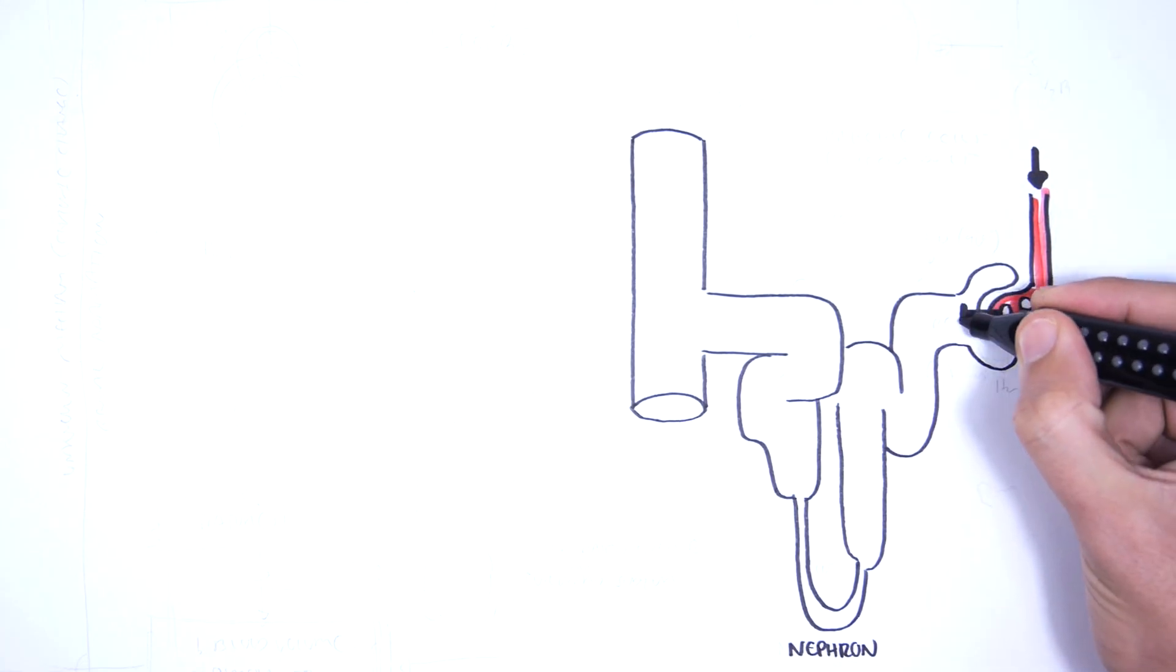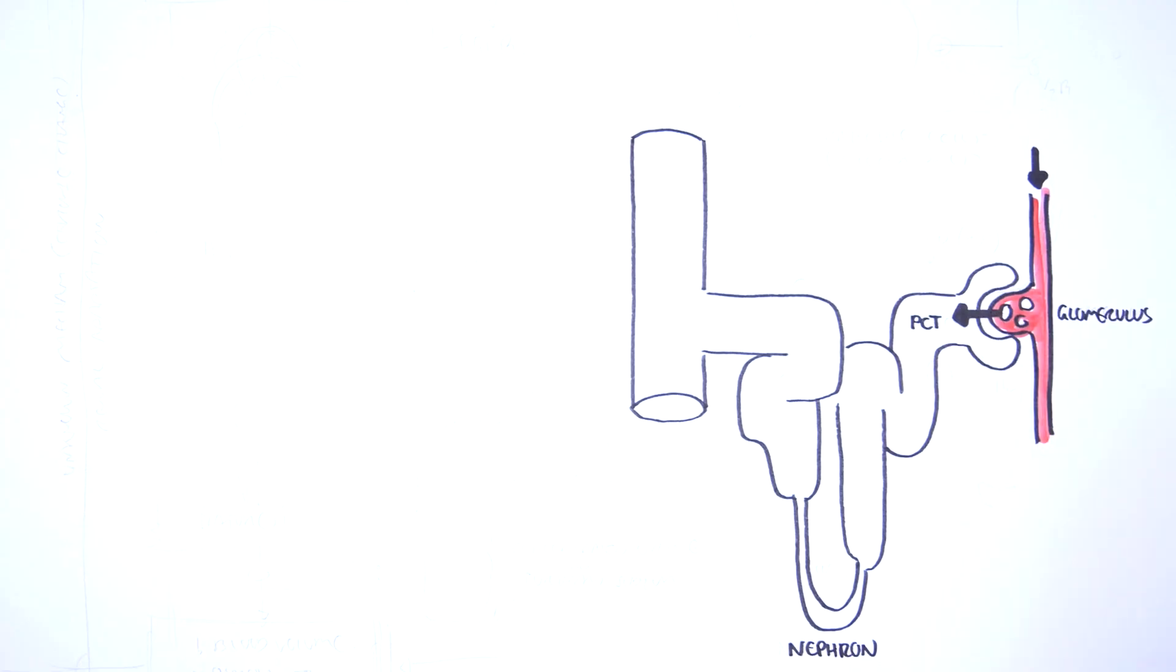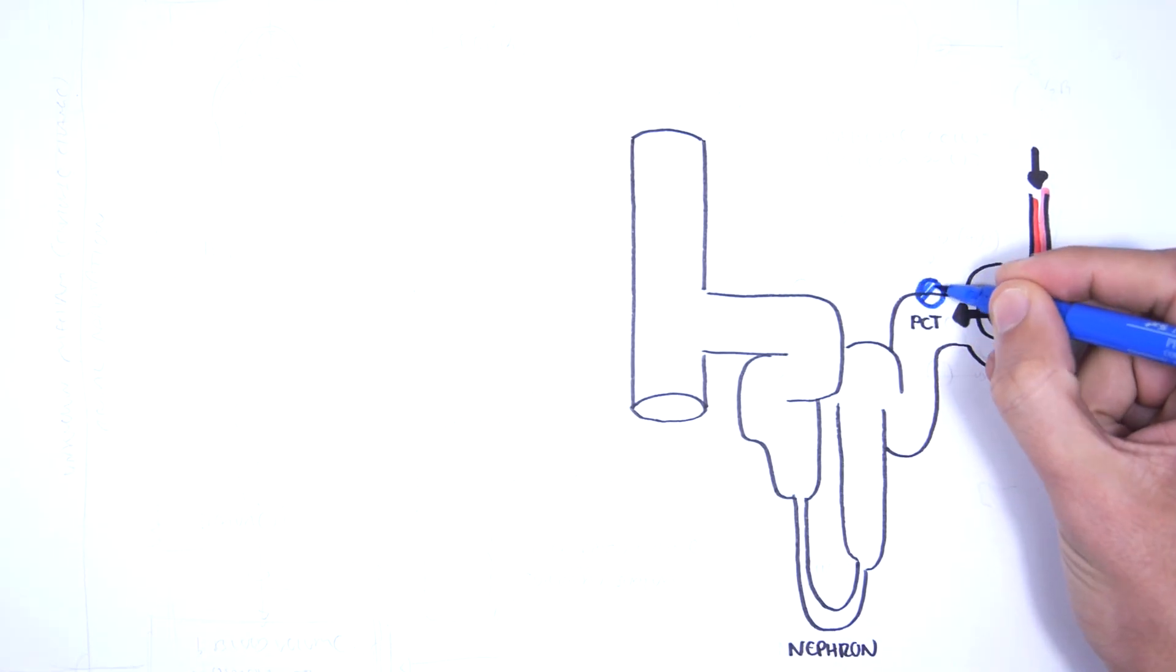The glomerulus will filter blood through and into the nephron tubules. It enters the first part of the nephron called the proximal convoluted tubule.